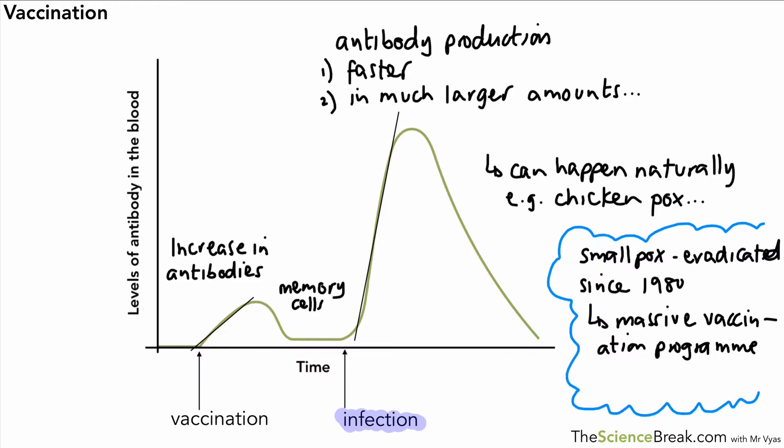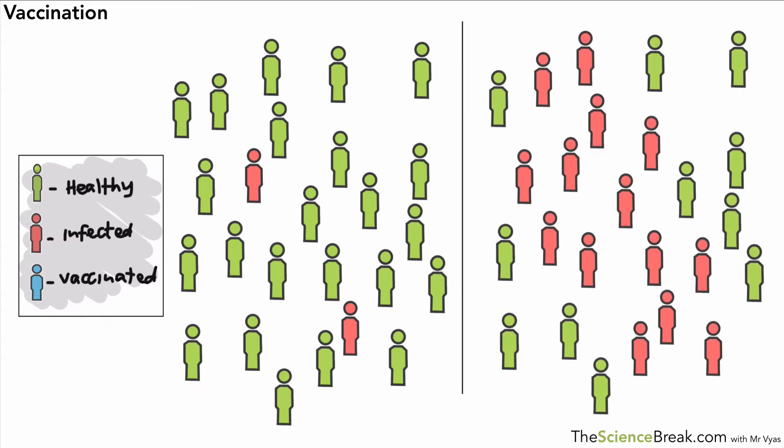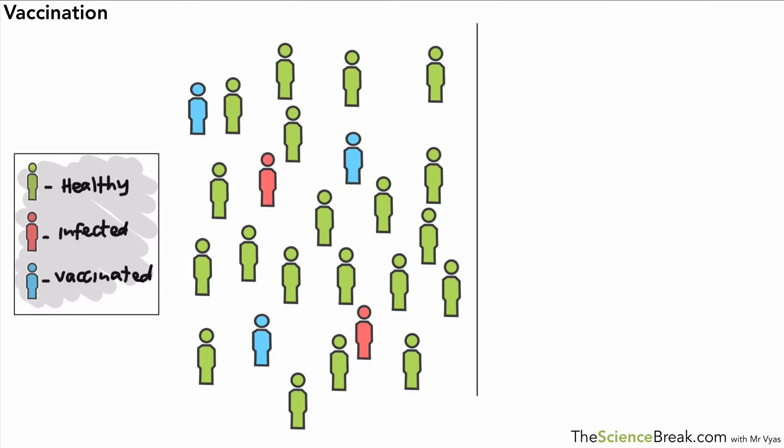Now before we end the video it's worth spending one or two minutes on looking at why it's so important to get lots of people vaccinated against a particular disease. So have a look at this, we've got a population of people and there's a key there. We've got healthy in green, infected people in red, and vaccinated in blue. There's no vaccinated currently on the screen but you can imagine that if we've got a few infected people and no vaccinated people that disease could quite easily spread through the population, especially if it's a particularly infectious disease, and you can imagine a large amount of the population will get that disease.